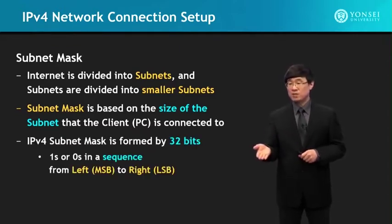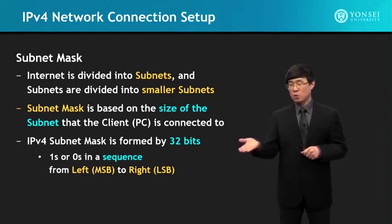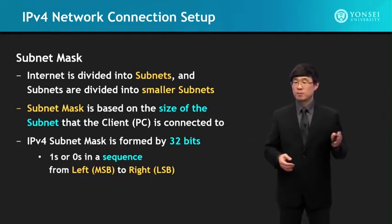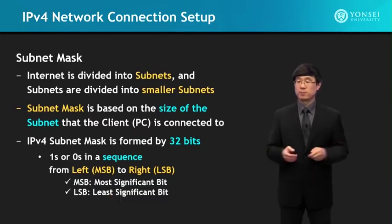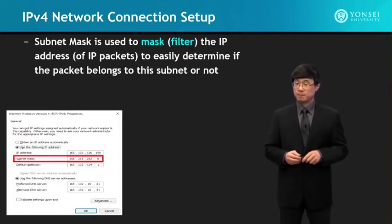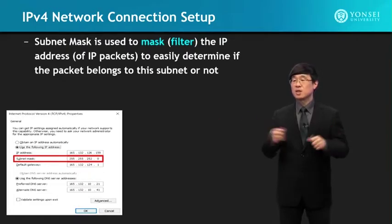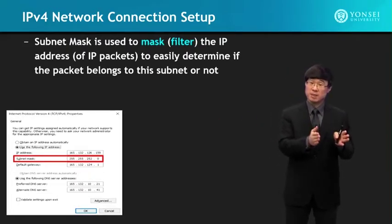An IPv4 subnet mask is formed by 32 bits, the same length as its IP address. You have ones or zeros in a sequence from left to right — from the left MSB (most significant bit) to the right LSB (least significant bit). The subnet mask is used to filter the IP address such that you can easily determine if a packet belongs to this subnet or not.